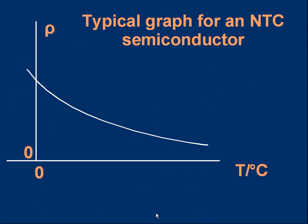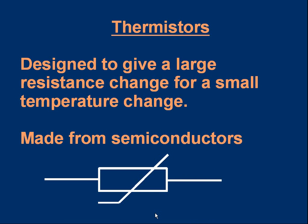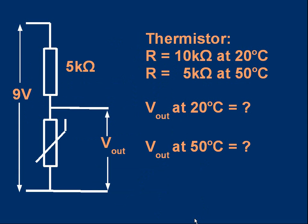In electronics, it's very useful to have components which change the resistance significantly when the temperature changes, designed to give a large resistance change for a small temperature change. These devices are called thermistors, which is a combination of the word thermal and resistor. They're made from semiconductors, and that's the symbol. They can be made PTC or NTC. In a circuit, they might be used as part of a potential divider. If you're not familiar with potential dividers, you might want to watch the lesson on that.